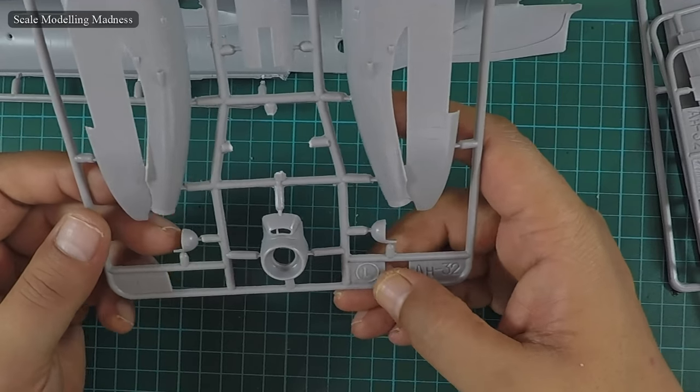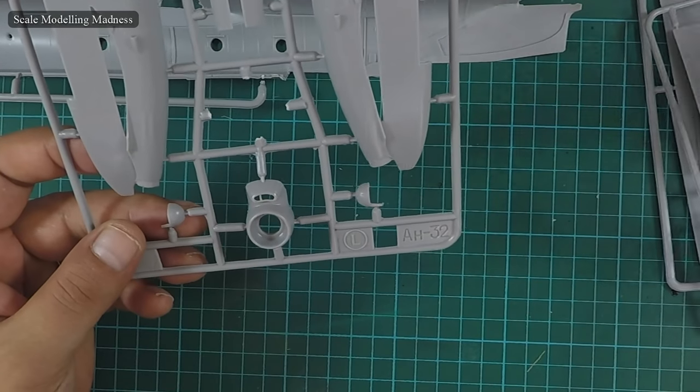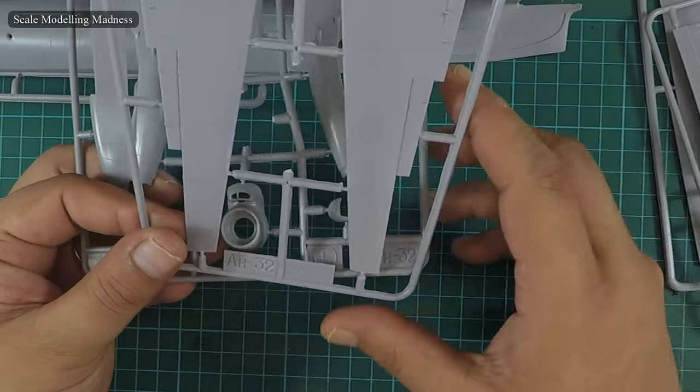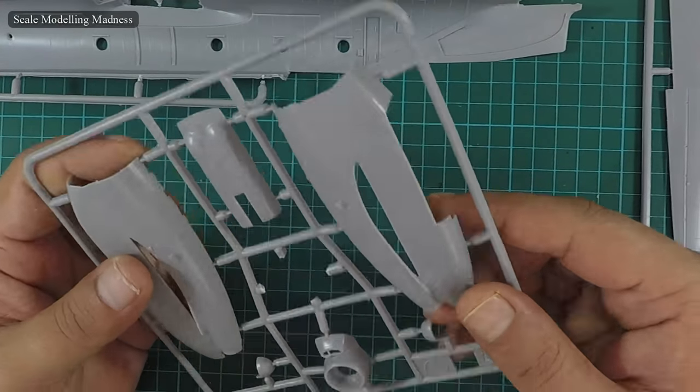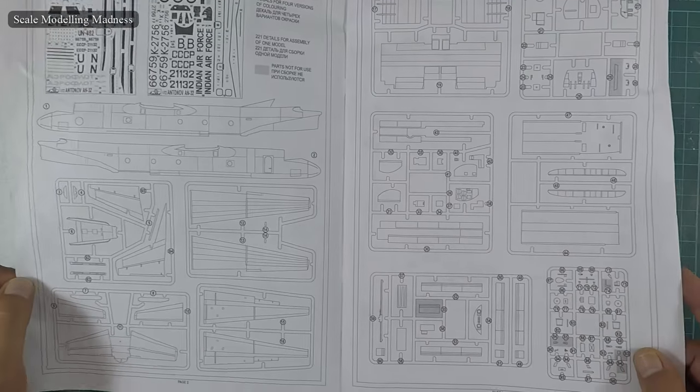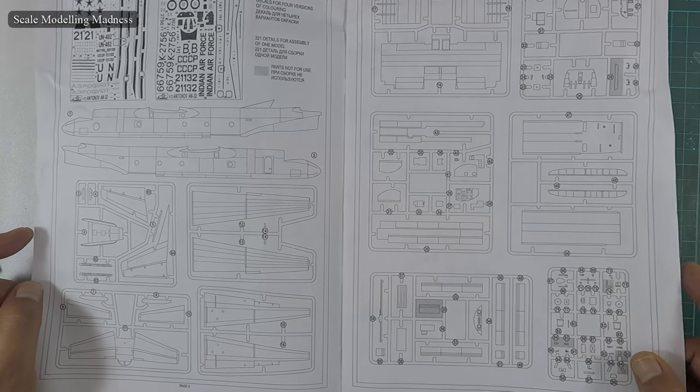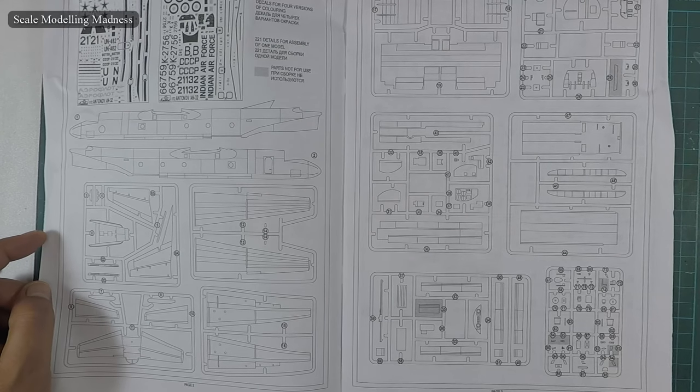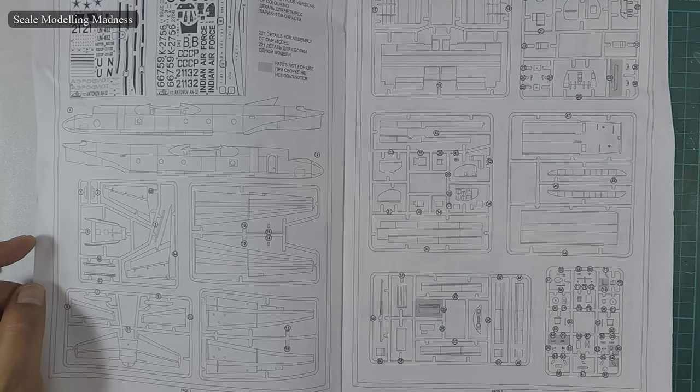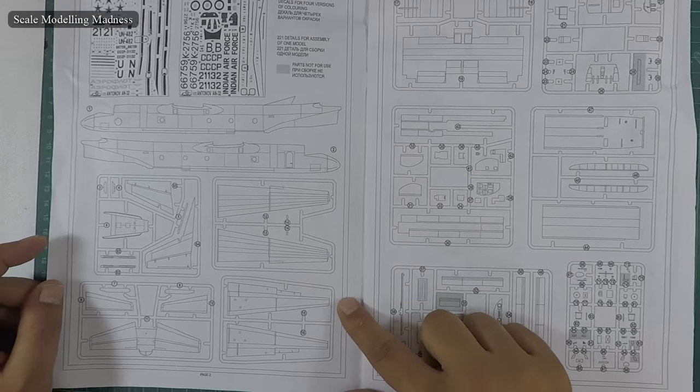So here's one more unique thing about this kit. None of the sprues or the parts are numbered. So one has to constantly back refer to this sprue map here on the instruction sheet, identify the sprue by shape and then try and find the part. I have never seen this before and with so many parts in the kit, what should have been a fairly simple task turned out to be one time consuming exercise.